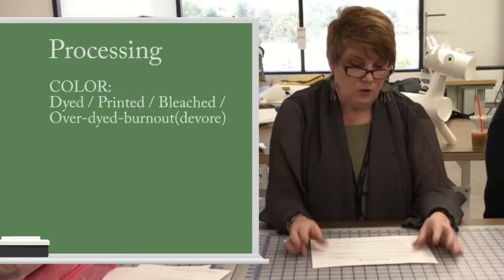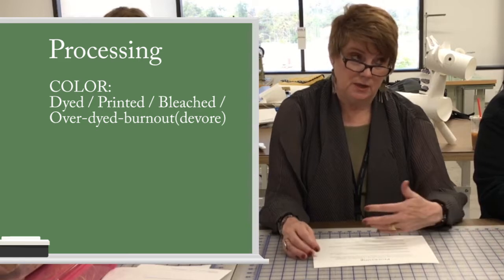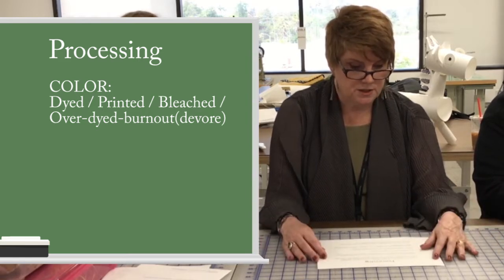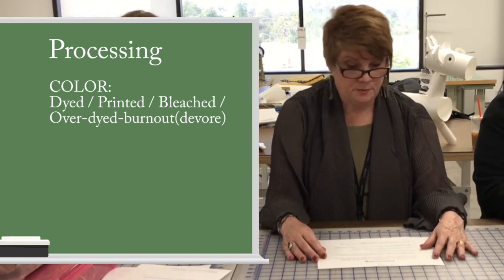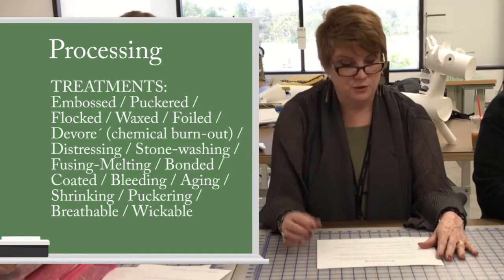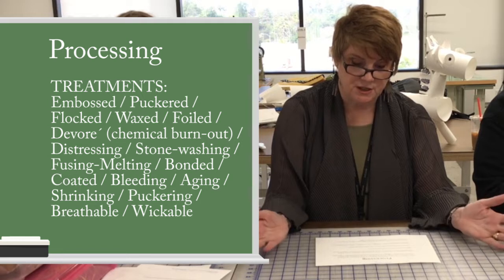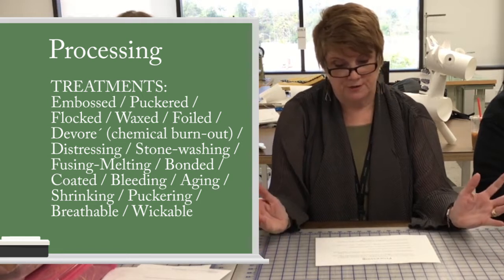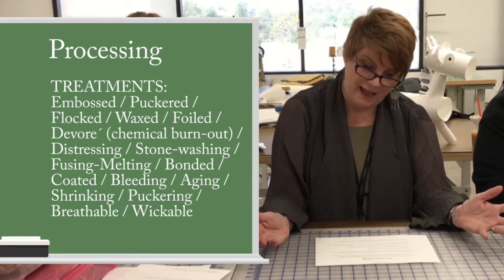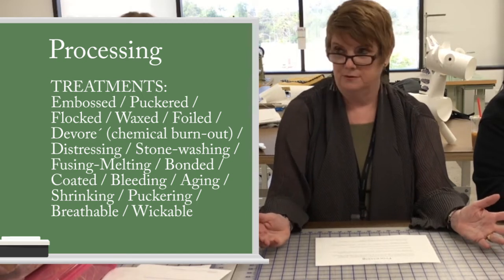All the different kinds of processing that are available — and there's more coming. Processing includes: embossed, puckered, flocked, waxed, foiled, devore which is a chemical burnout, distressing, stonewashing, fuse melting, bonded, coated, bleeding, aging, shrinking, puckering, breathable, and wickable. That's just one list.